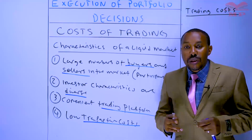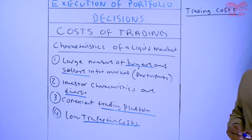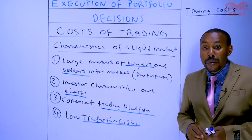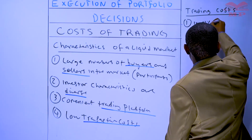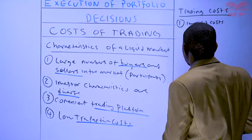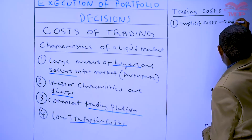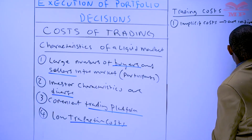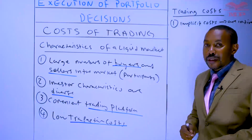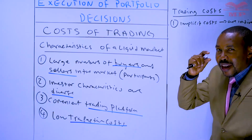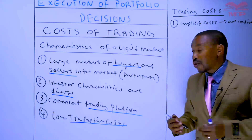There are two types of costs that portfolio managers or players within the financial services industry actually incur. The first cost is implicit cost. Implicit costs are considered to be indirect costs. So when performing the trading activity — buying and selling of securities — these implicit costs may not be readily identifiable or discernible. They are real nonetheless. Implicit costs include the following.